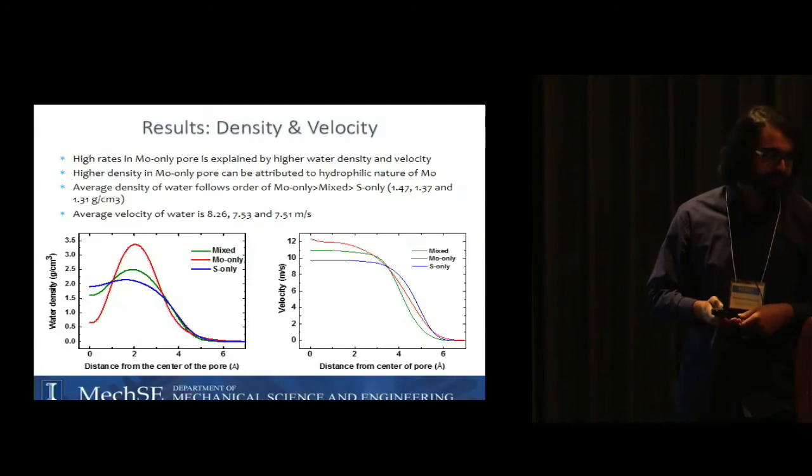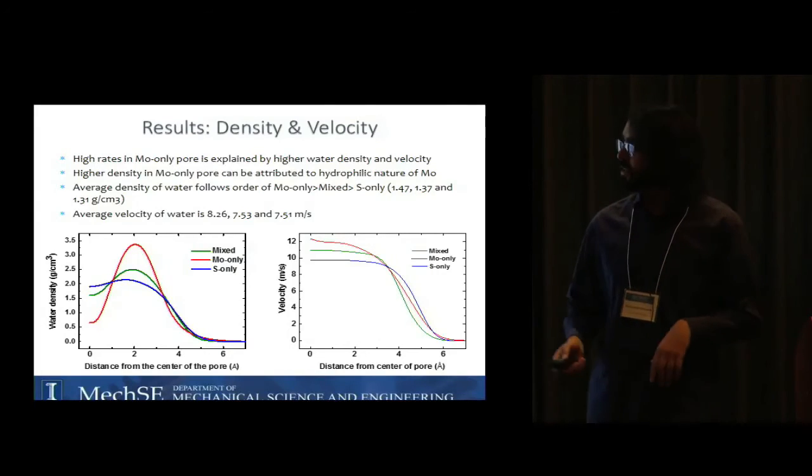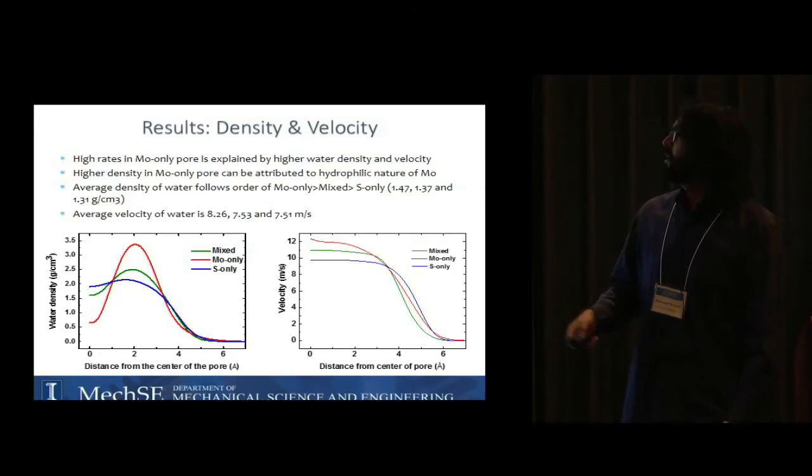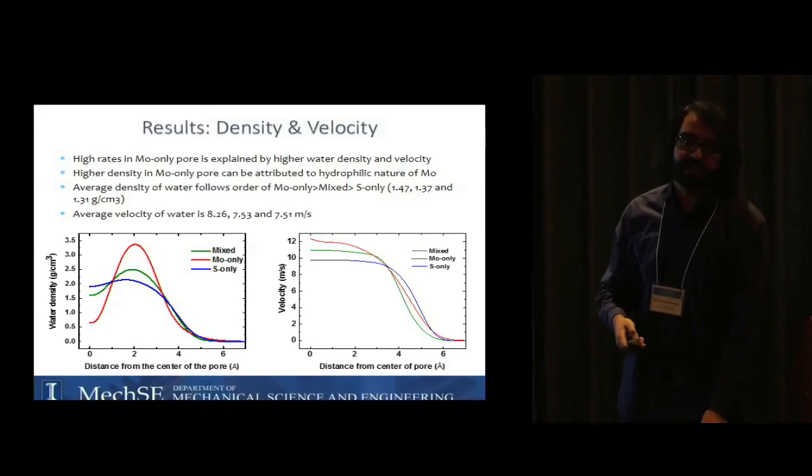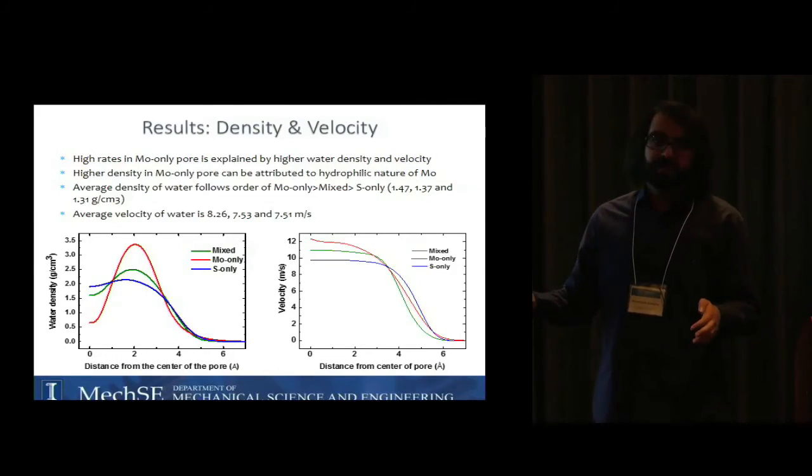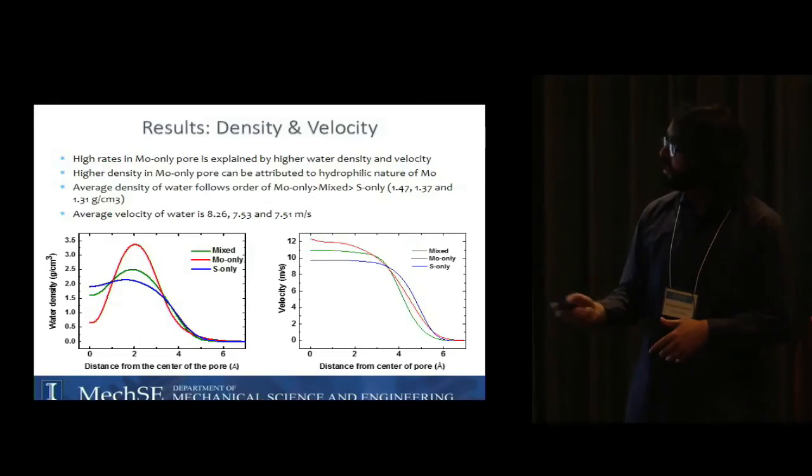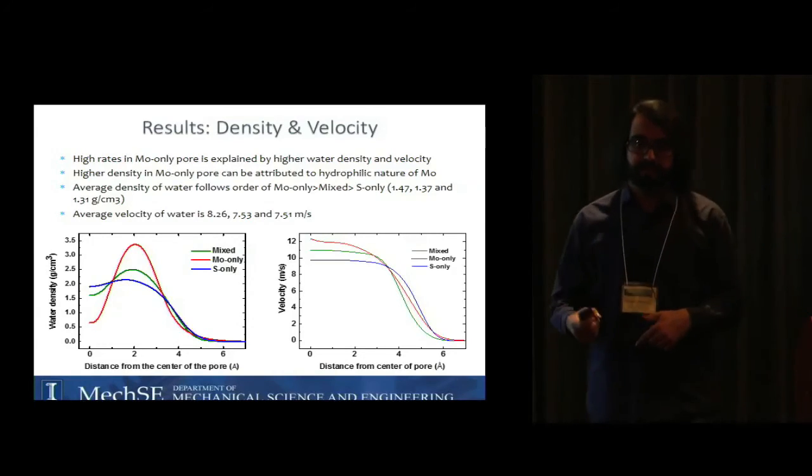permeation rate for Mo only pore? We know that flux is a function of density and velocity inside the pore. We plotted the water density as a function of the radial distance from the center of the pore and also the velocity of water molecules as a function of the radial distance. As you can see, for both density and velocity, the Mo only nanopore has the highest water density and velocity. It's winning on both fronts. For density it's obvious because Mo is highly hydrophilic so it attracts more water. But it was not clear to us at the time why Mo only has higher velocity.